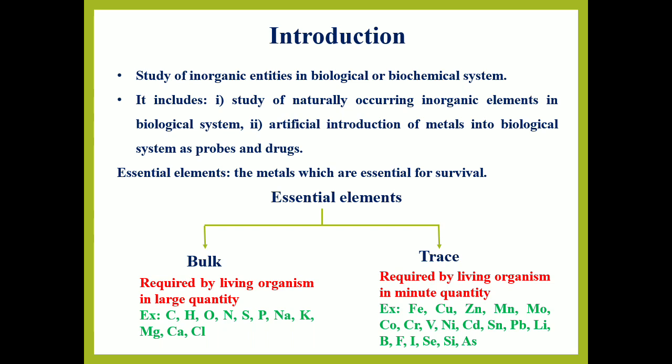Essential elements can be categorized on the basis of quantity. The first category is bulk elements and the second is trace elements. Bulk essential elements are those required in larger quantities for survival — for example, carbon, hydrogen, sulfur, sodium, magnesium, etc. Trace elements are required in minute quantities but are essential for survival — for example, iron, copper, and zinc are all essential trace elements.